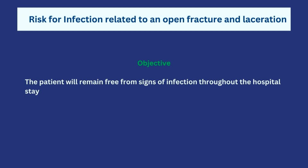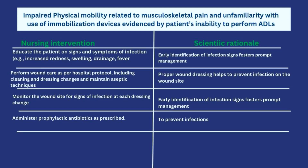The first intervention is to educate the patient on signs and symptoms of infection such as increased redness, swelling, drainage, and fever, so they can promptly report these to the nurse. This gives patients a sense of involvement in their own care. The scientific rationale is that early identification of infection signs prompts early management, preventing the infection from becoming a complicated problem.